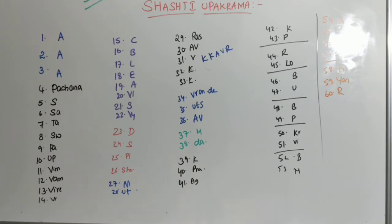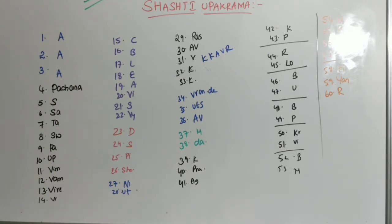Now moving on to the third set. It is the Ashtavita Shastra Karma, covering numbers fifteen to twenty-two: Chedhana, Bedhana, Lekhana, Eshana, Aharana, Vishravana, Sivana, and Vyadhana. Fifteenth is Chedhana, sixteenth is Bedhana, seventeenth is Lekhana, eighteenth is Eshana, nineteenth is Aharana, twentieth is Vishravana, twenty-first is Sivana, and twenty-second is Vyadhana. By this, the third set is completed.